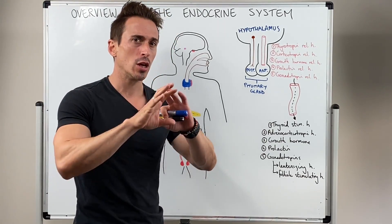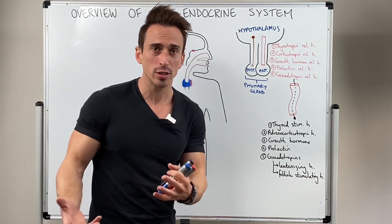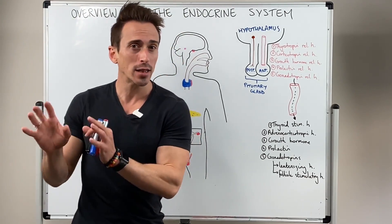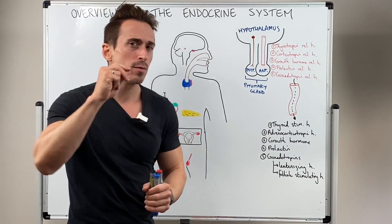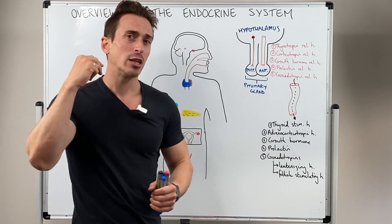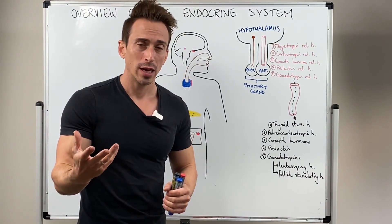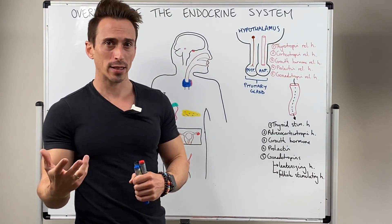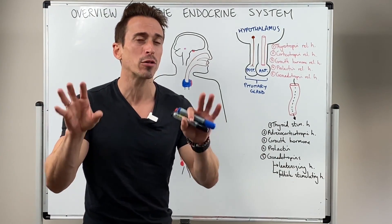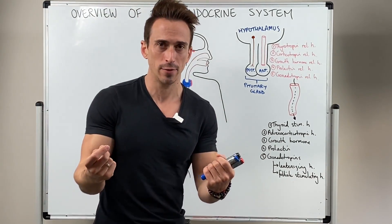This is quite different to the nervous system, which also is a communication system that controls physiological activity like the endocrine system. But the nervous system is fast, it's direct, and it's short acting. The endocrine system is slow, it's indirect, and it's quite long acting. So that's some of the differences, even though they're both communication networks that control physiological activity.